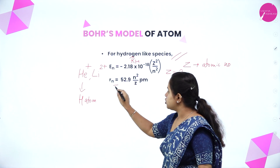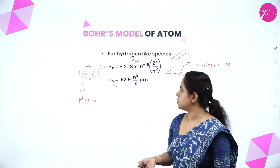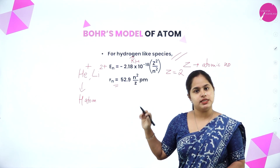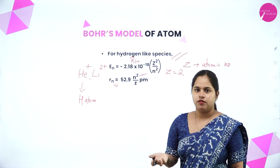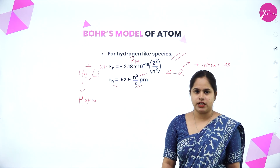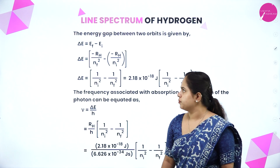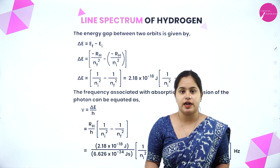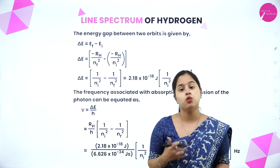The radius for a hydrogen-like species can also be calculated using the equation Rn = 52.9 × N²/Z picometers, where N is the energy level and Z is the atomic number. These two equations — for energy and radius of hydrogen-like species — are very important. Now we are going to find out how the line spectrum of hydrogen can be explained by Bohr's model.